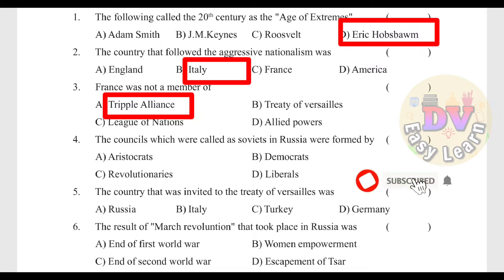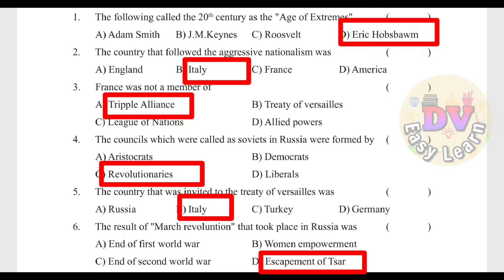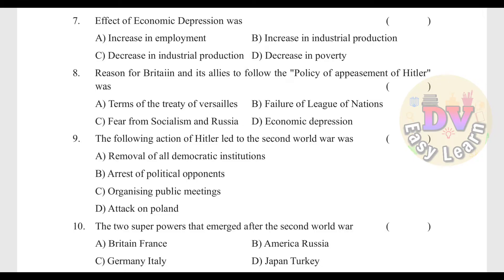Question 4: The councils called Soviets in Russia were formed by — Answer: Revolutionaries. Question 5: The country that was invaded per the Treaty of Versailles. Question 6: The result of the March Revolution in Russia — Answer: Escapement of Tsar. Question 7: Effect of economic depression — Answer: Decrease in industrial production.